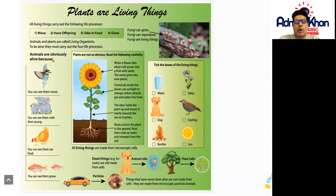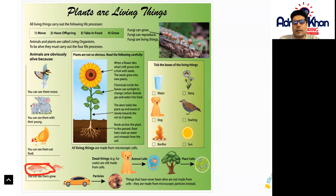Animals are obviously alive because you can see them move, such as this bird. You can see them with their young, such as elephants here. You can see them eat, such as this particular hen, and you can also see them grow, such as this fish example at the bottom.